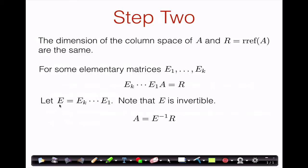Define E to be the product of E1 through Ek. The most important thing for us is that E is an invertible matrix. This is because all of E1 through Ek are invertible — they're elementary matrices — and therefore the product of invertible matrices is also invertible, so E is invertible.